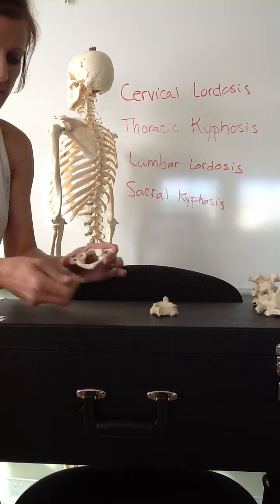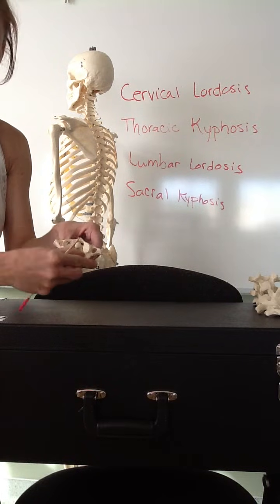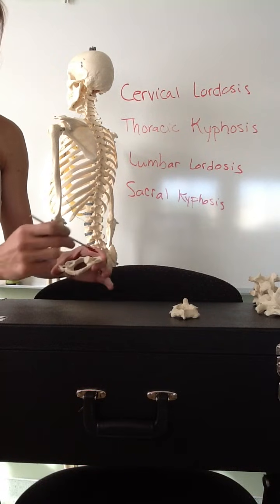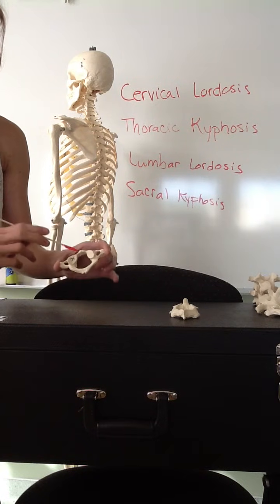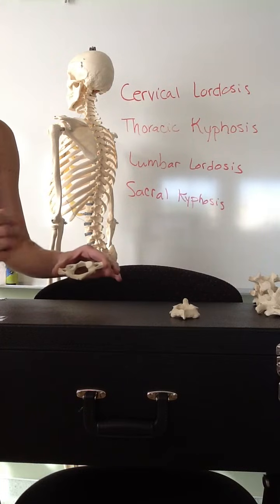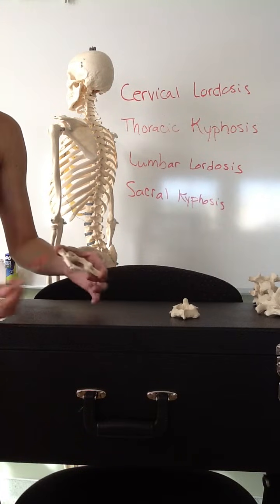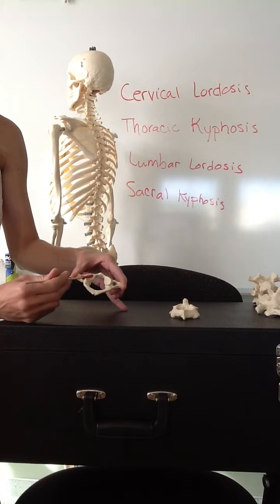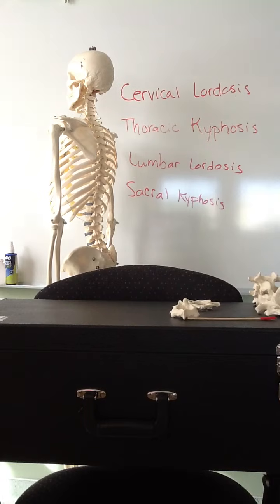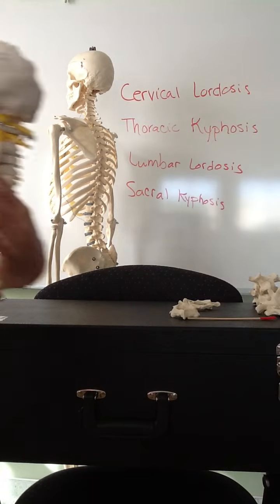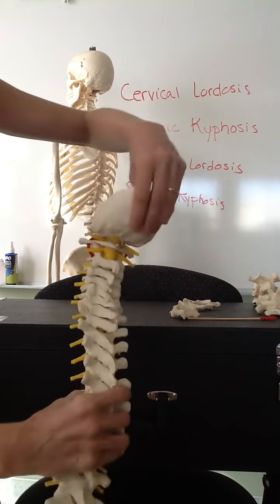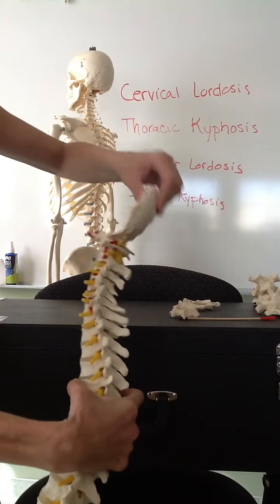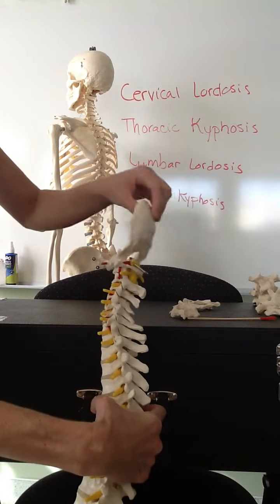There is no vertebral body in the atlas because where the body would be, there is a projection sticking up from the axis. C1 still has its transverse processes, a small spinous process, transverse foramen, and vertebral foramen. It has very large, flat superior articular processes, which are important because they articulate with the base of the occipital bone. The occipital condyles sit right into those superior articular processes, allowing you to nod your head yes.